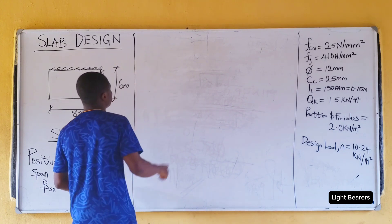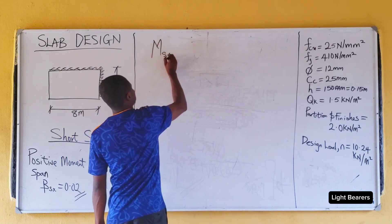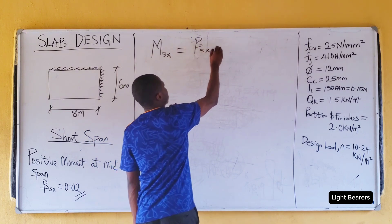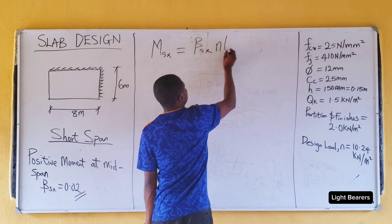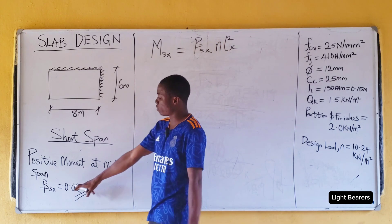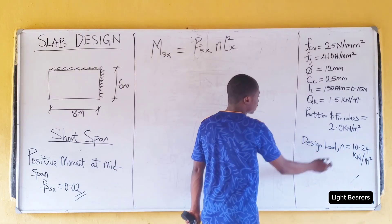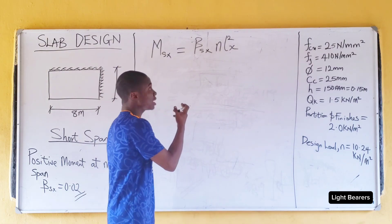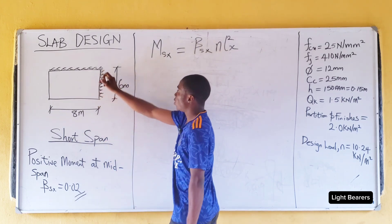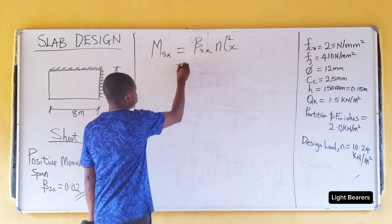Now let's find the design ultimate moment of the slab, msx. msx equals dsx times n times lx squared. dsx is the moment coefficient of the slab, n is the design load of the slab — we derived this in our first class — and lx squared is the short span or short side of the slab. Now let's continue to the equation.